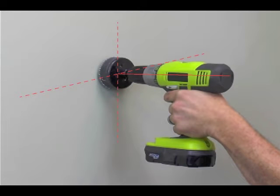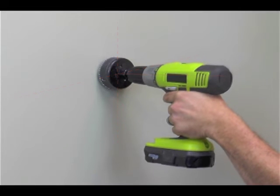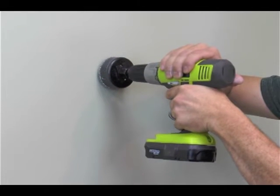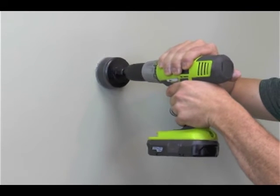Start by aligning the pilot drill of the hole saw with one of the center marks. Make sure that the drill axis is perpendicular with the wall surface and that the saw teeth contact the drywall evenly. Don't drill too fast and don't push very hard.